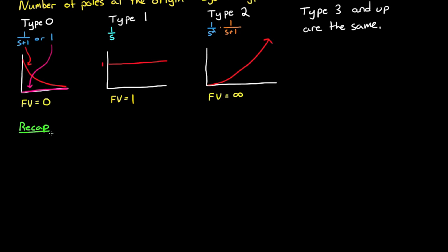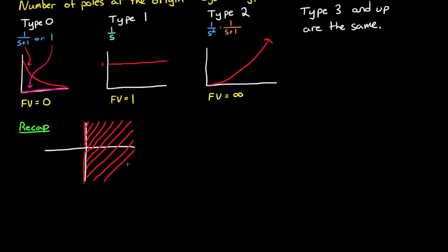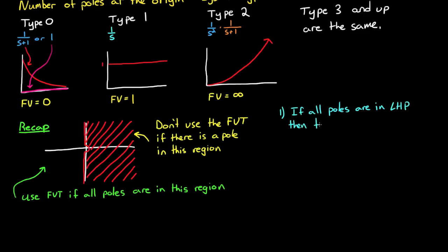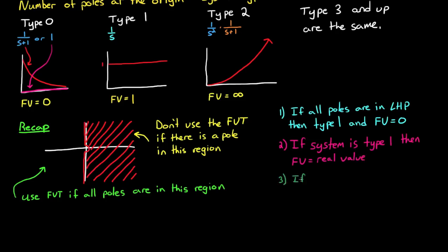So let's quickly recap. You can use the final value theorem only if the transfer function has poles exclusively in the left half-plane, or at the origin, or a combination of the two. If there's even a single pole in the right half-plane or a pair of poles on the imaginary line, then you can't use the final value theorem. Also, if all poles are in the left half-plane, then this is a type 0 system, and for type 0 systems the final value will always be 0. If the system is type 1, the final value will equal some real value. And if the system is type 2 or higher, the final value will be infinity — but at least the final value theorem will produce the correct answer.